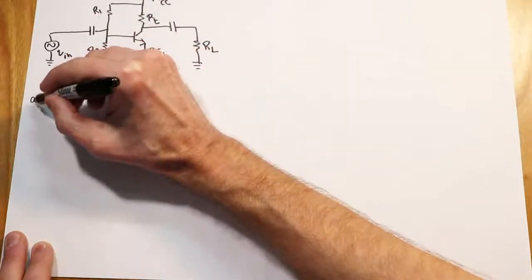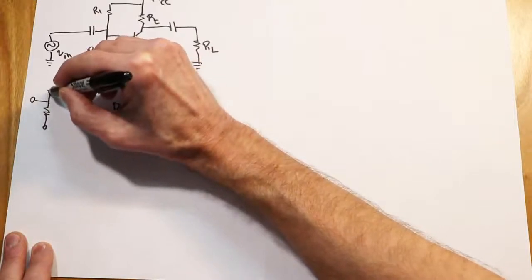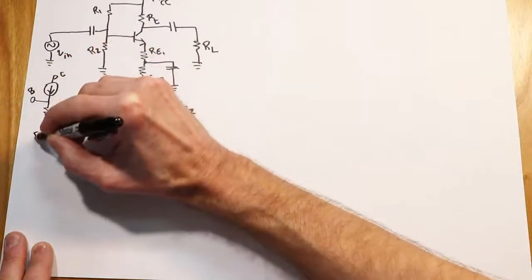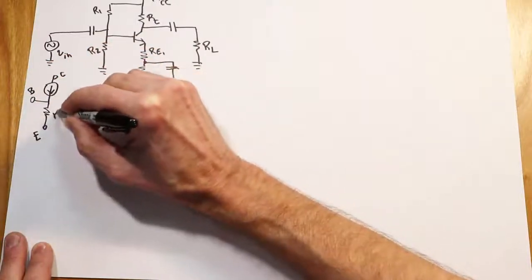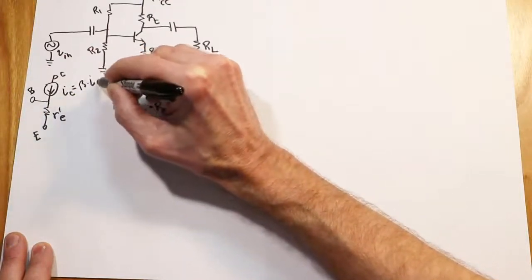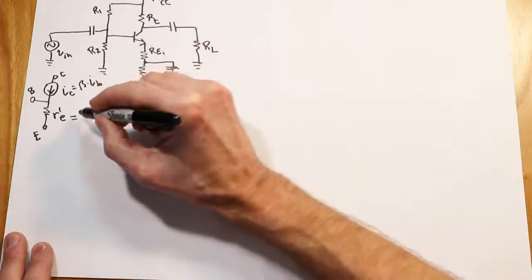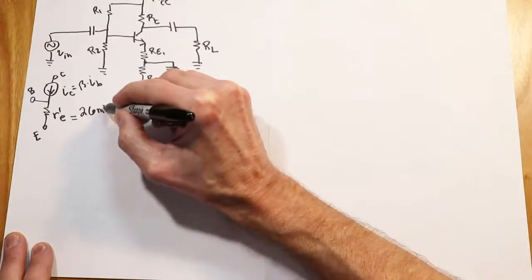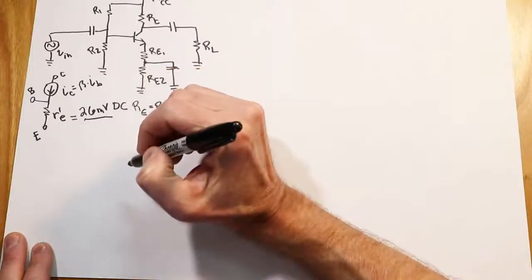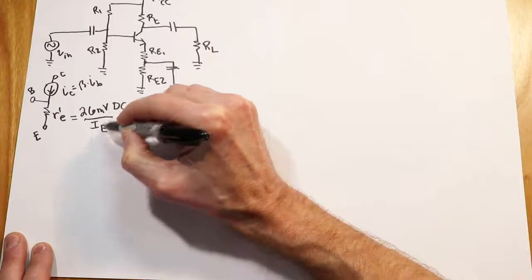We need the emitter current because for the transistor model, the internal value of dynamic emitter resistance R'e is a function of emitter current — the DC current. Our model has collector, base, and emitter. R'e is very important: it's a function of the design of the transistor. It's 26 millivolts — we take that as a constant at room temperature — divided by IE, and that gives us the value of R'e.